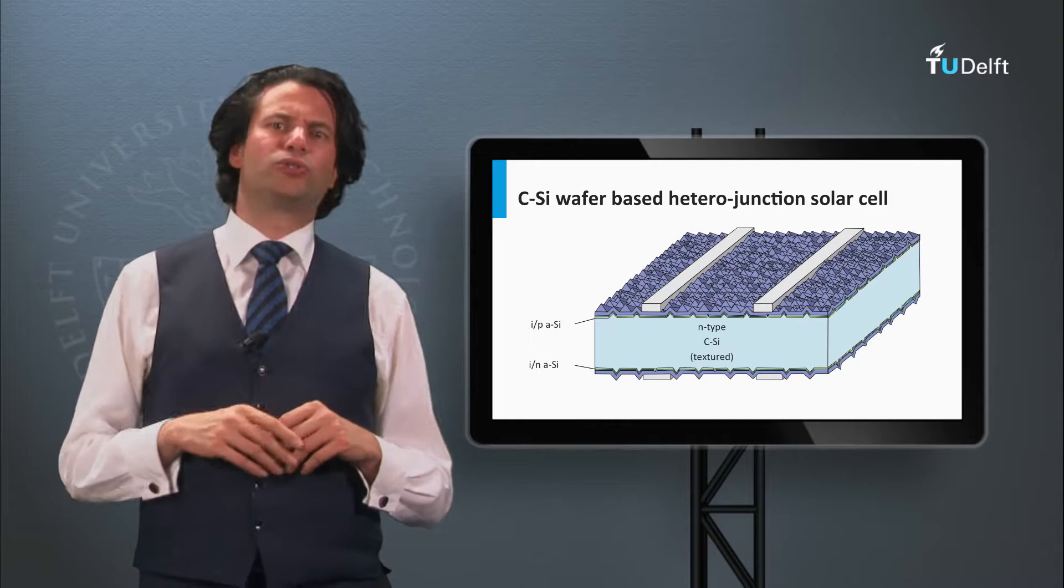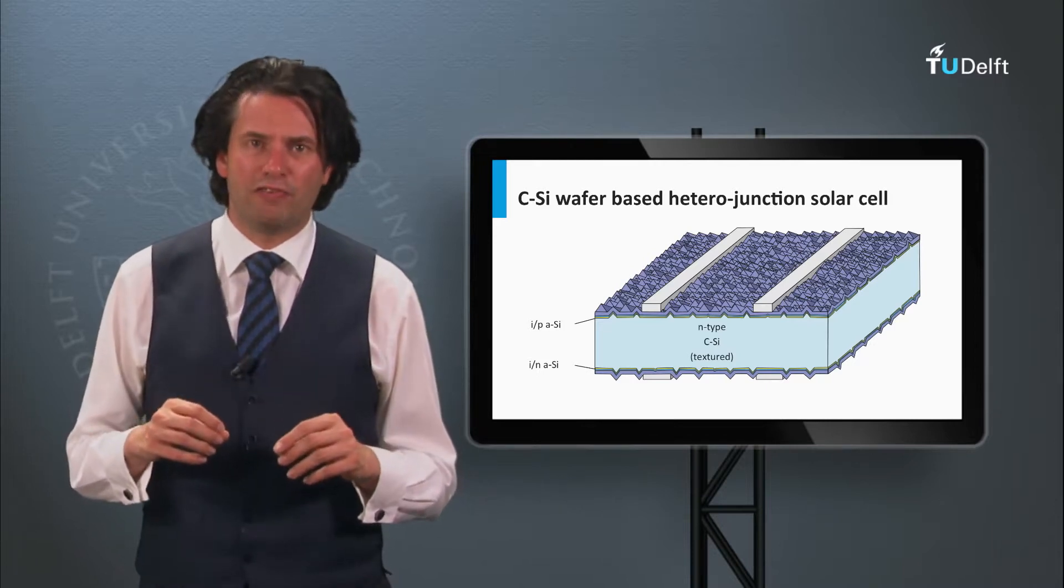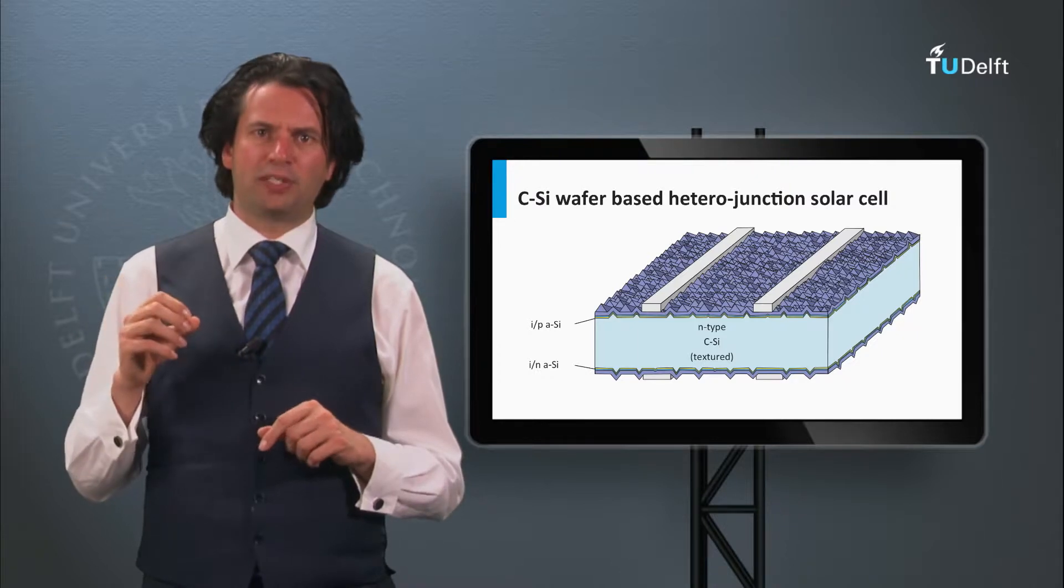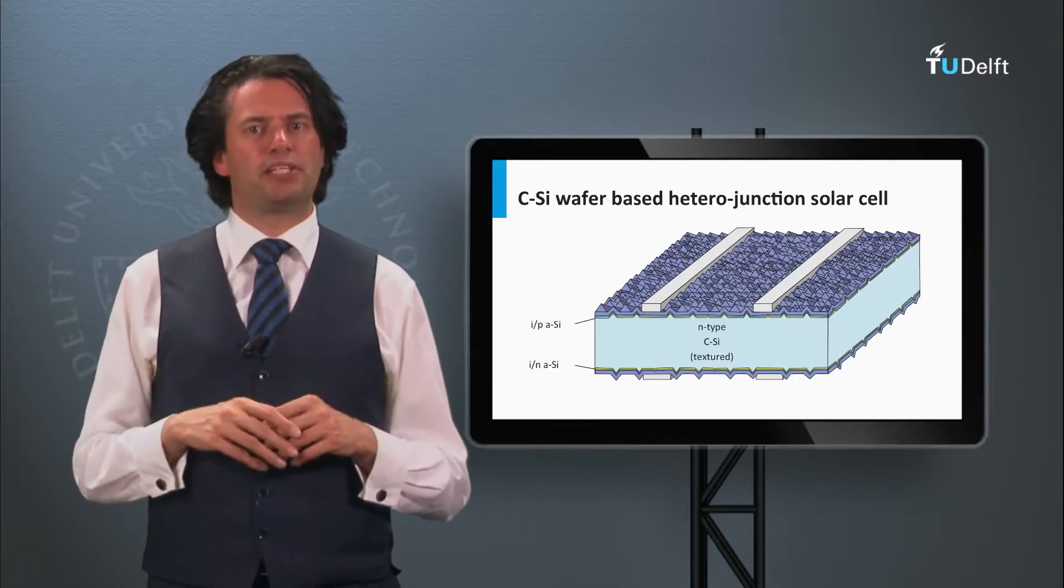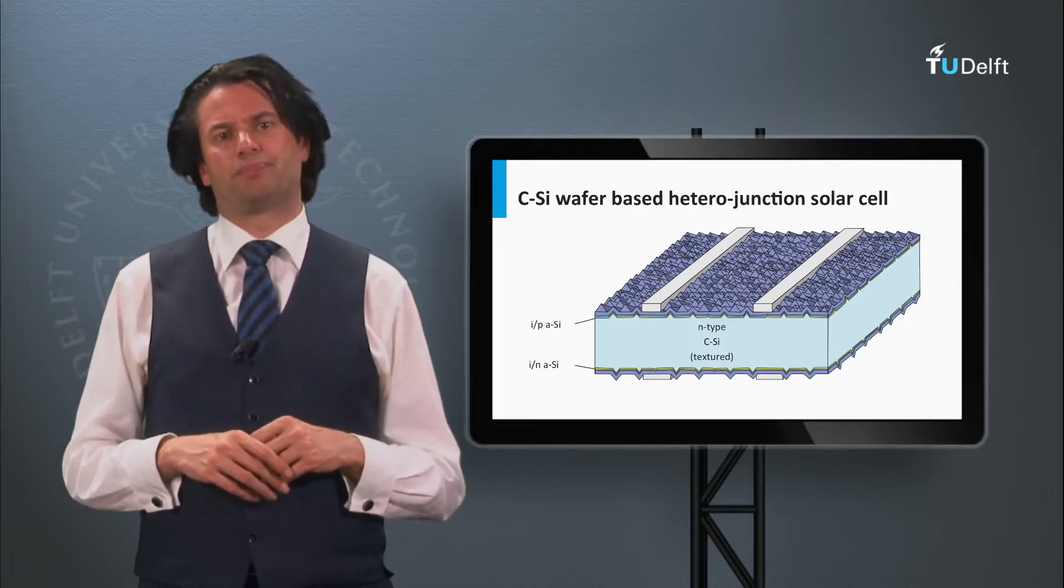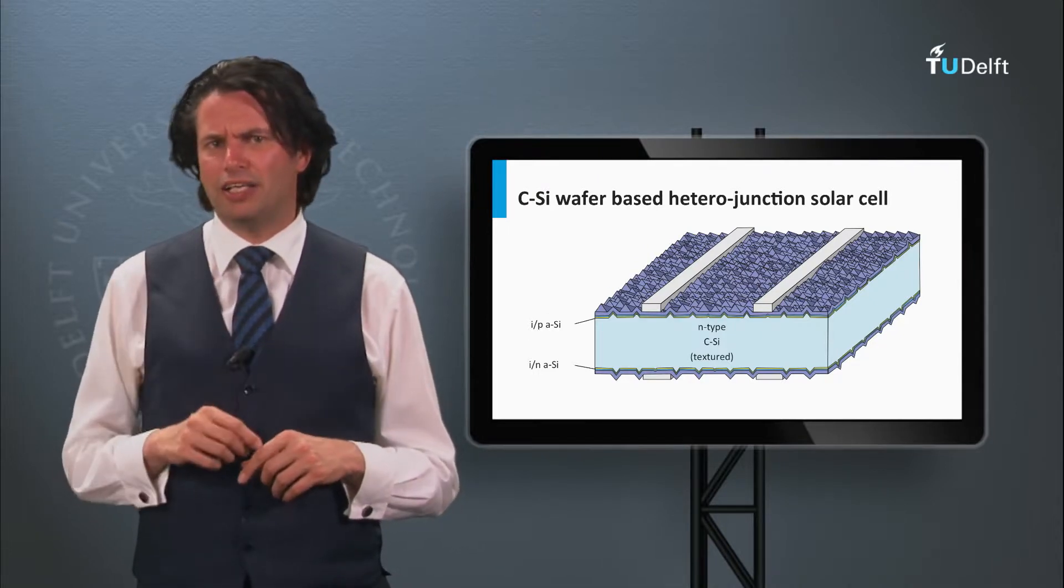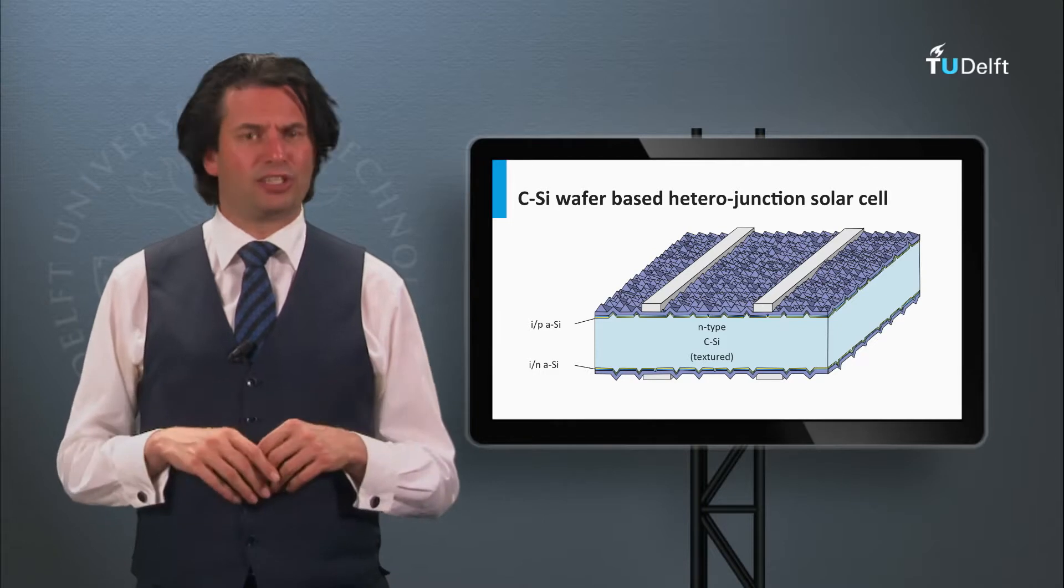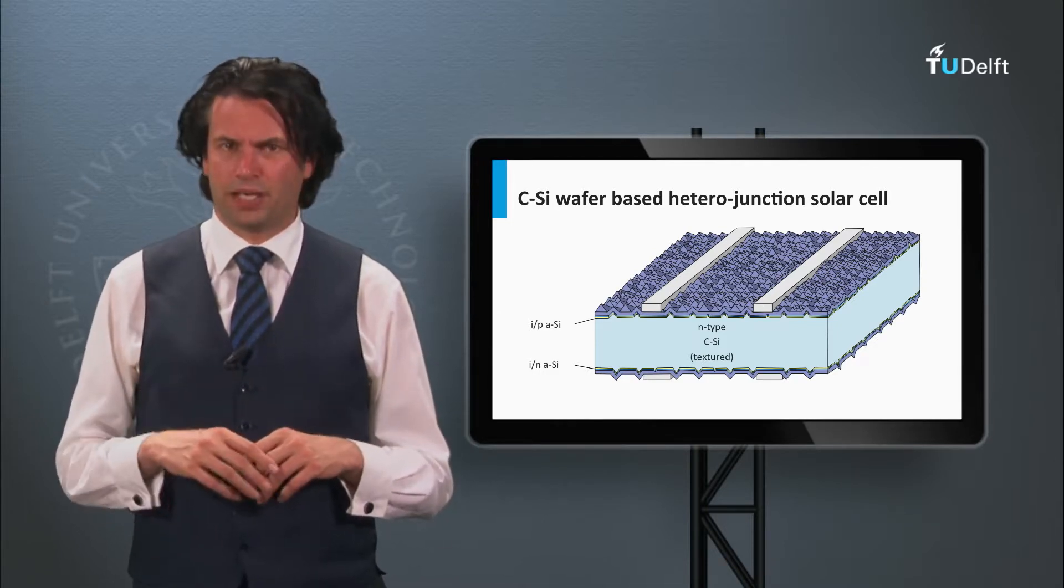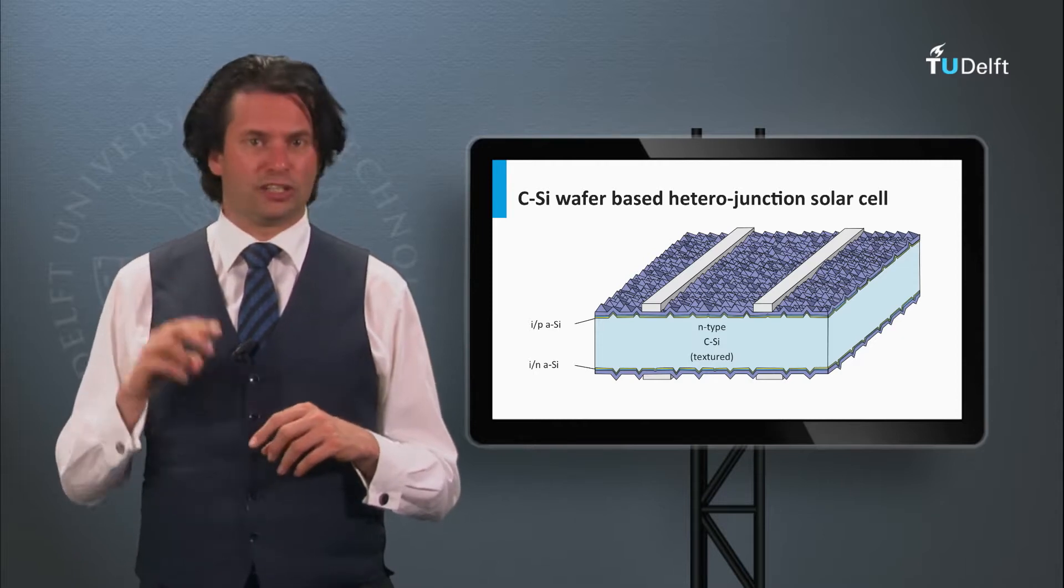Now let's go to the crystalline silicon wafer based heterojunction solar cell. This is a concept which has been invented by the Japanese company Sanyo, which is currently part of Panasonic. The Panasonic cell is called the HIT cell, which stands for heterostructure with intrinsic thin film. The HIT cell configuration has two junctions.